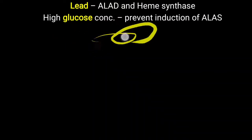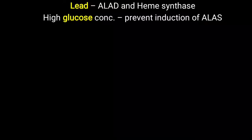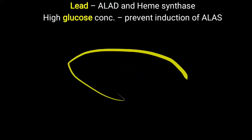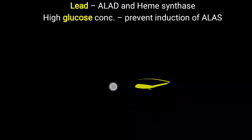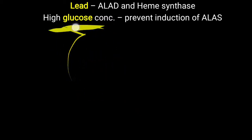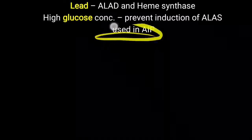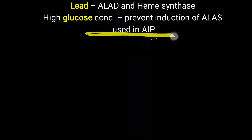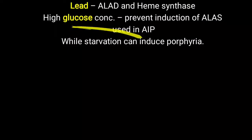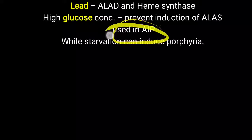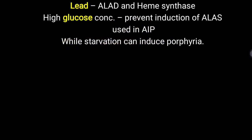High glucose concentration prevents induction of ALA synthase, thereby reducing heme formation. This characteristic can be utilized in porphyria. When there is uncontrolled porphyrin production causing painful attacks, giving high glucose or glucose supplementation prevents induction of ALA synthase and decreases heme production. This is helpful for reducing painful attacks, particularly in acute intermittent porphyria (AIP). Conversely, starvation decreases glucose and can induce porphyria attacks, so AIP patients must avoid starvation.